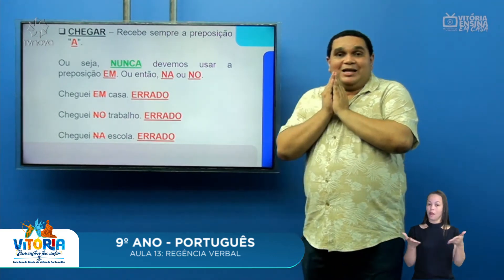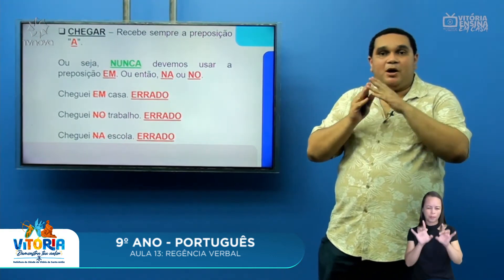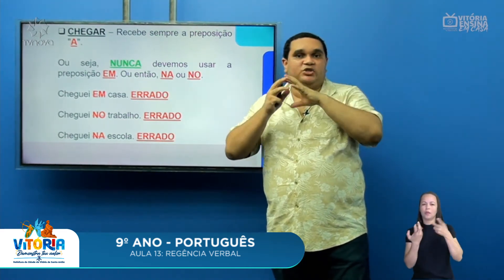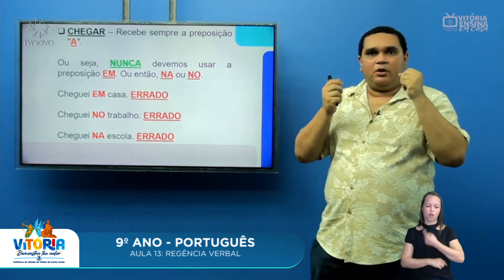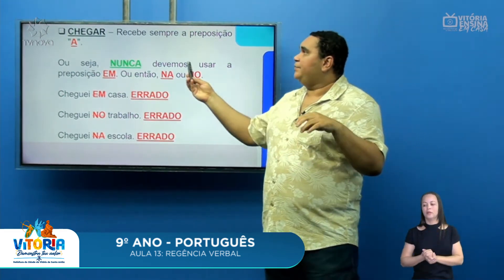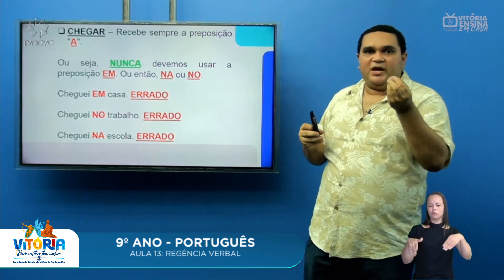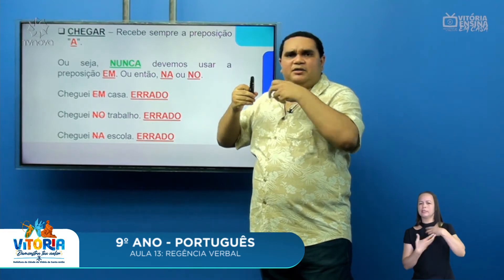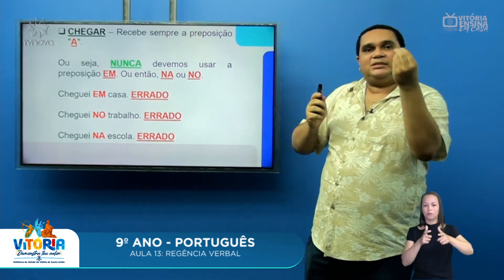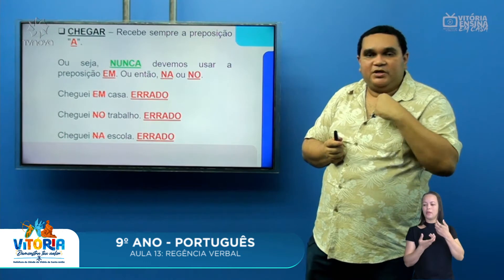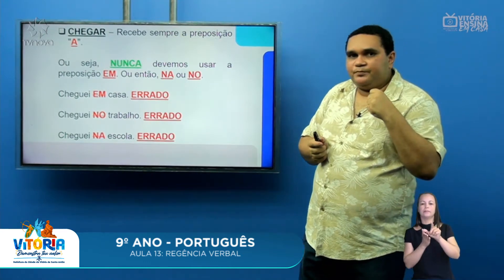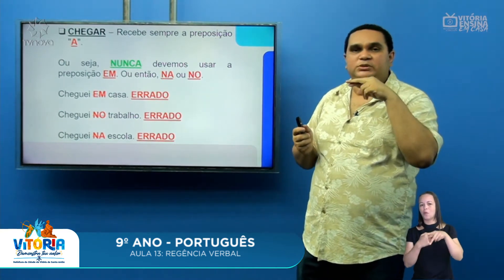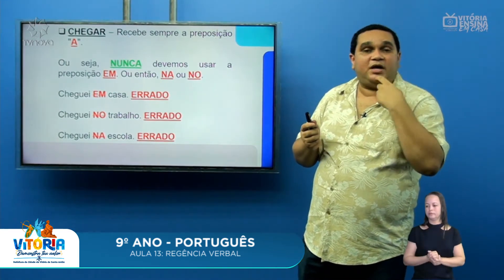Agora vamos tratar especificamente da regência verbal de alguns verbos. Vamos estudar apenas as regras mais utilizadas no dia a dia, as mais recorrentes. O verbo chegar: quando ele tem o sentido de você chegar em algum lugar, ele sempre vai receber a preposição 'a'. No nosso dia a dia, nós sempre utilizamos a preposição 'no' ou 'na', porém isso é incorreto.